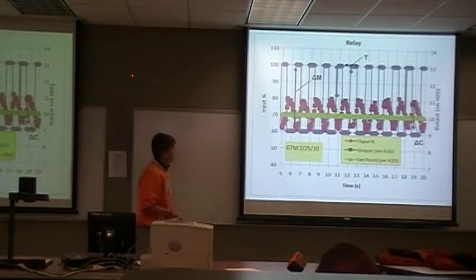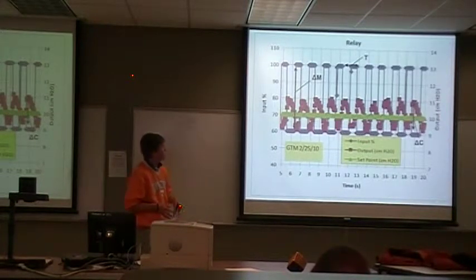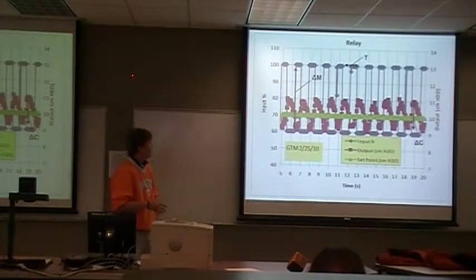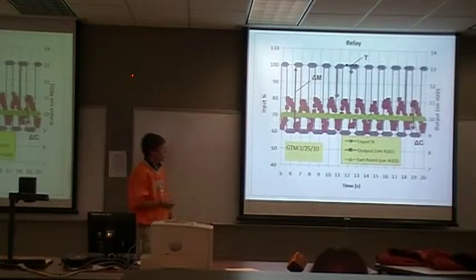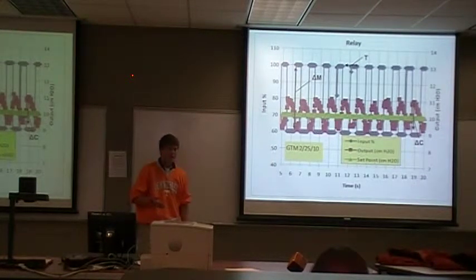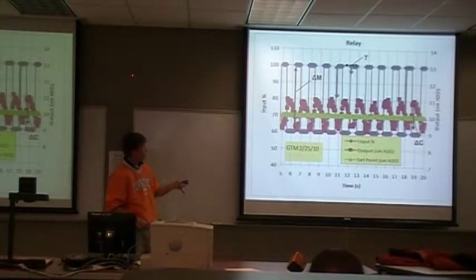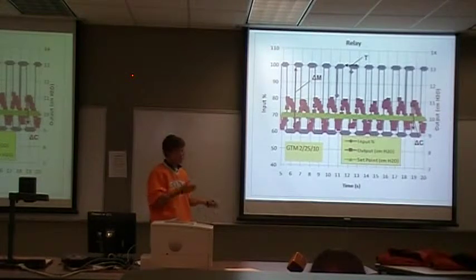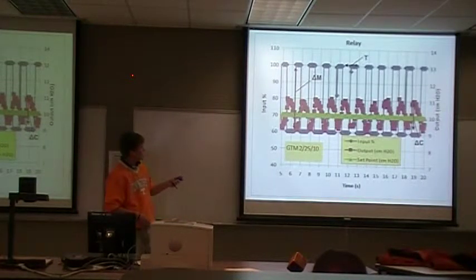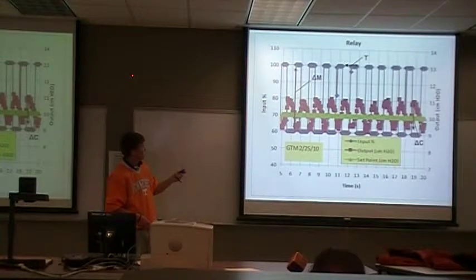For the relay feedback experiment, we set two different input values that we wanted the output to oscillate between. For this case, it was between 60 and 100% input. It would start out at a certain input and give an output. We had a set point — the green line here — and once the output, shown in purple, reached that set point, the input value would jump back down to the other input value. So, for instance, it went up to 100% input, the output reaches the set point, and the moment it does, the input jumps down to 60%, and it begins to cycle.